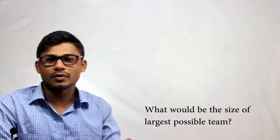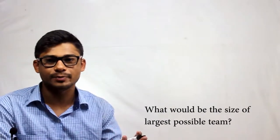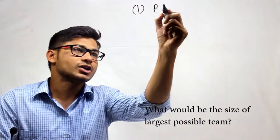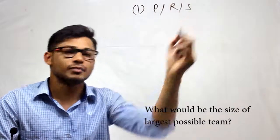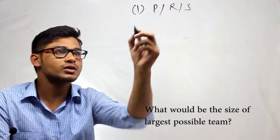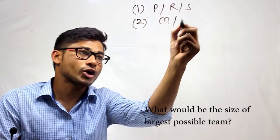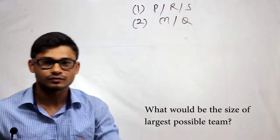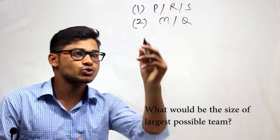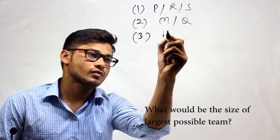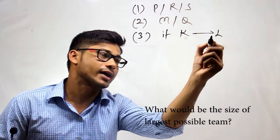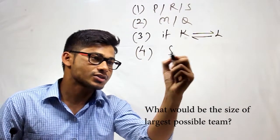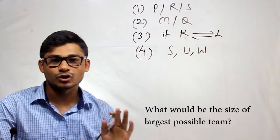The question says there are 10 members in a department and we have to form a team. Some conditions are given. First condition says either P or R or S must be there in a team. Second condition says either M or Q must be there in a team. Third condition says if I choose K, then I have to choose L and vice versa.